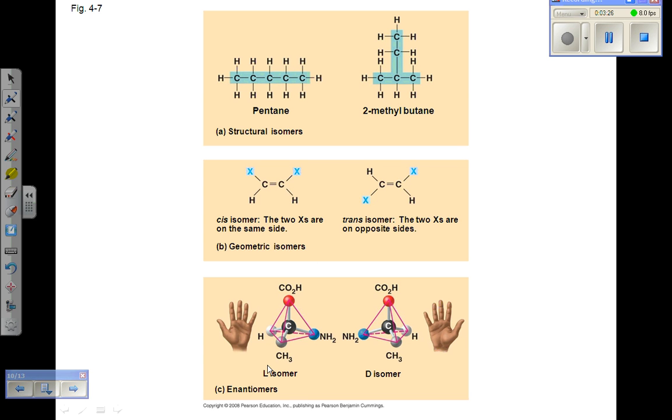Enantiomers are compounds that differ from each other in their spatial arrangement around an asymmetric carbon. This results in molecules that are mirror images of each other and cannot be superimposed on each other.